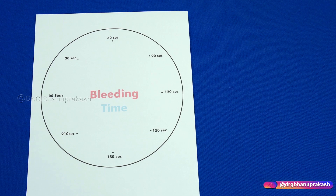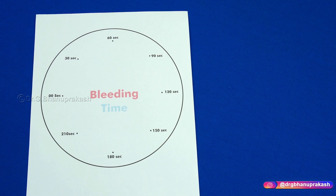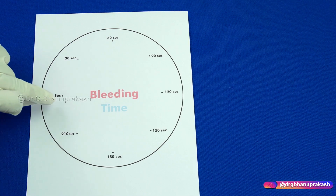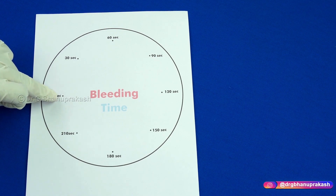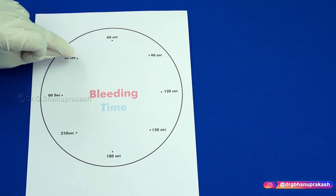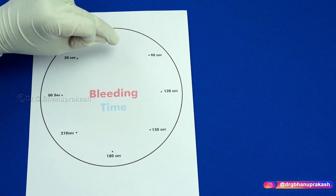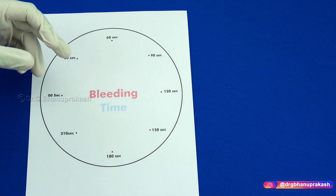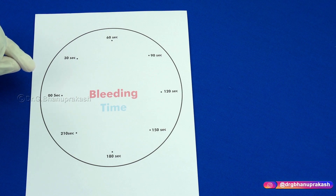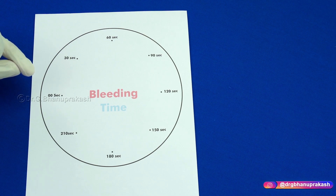Now let me explain the procedure. You explain the complete procedure to the patient, then prick the patient's finger. The moment you prick and see blood coming out, start the timer. Place a drop of blood at zero seconds, wait 30 seconds, then place the next drop at 30 seconds, and again at 60 seconds — continuing every 30-second interval until no drop of blood comes out of the prick point. Stop the timer and note the value — that is the bleeding time.